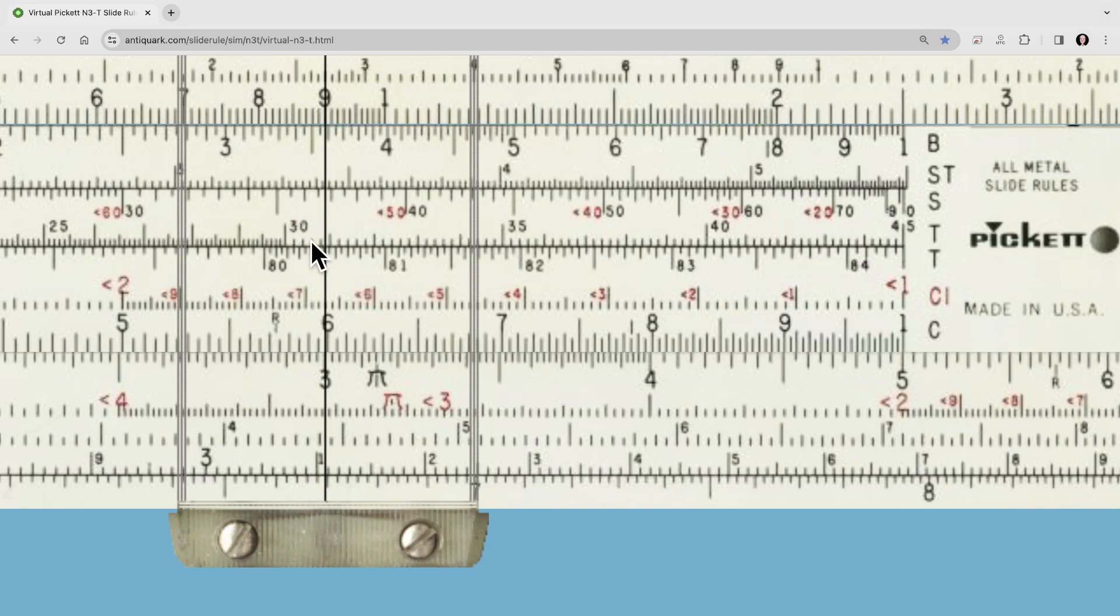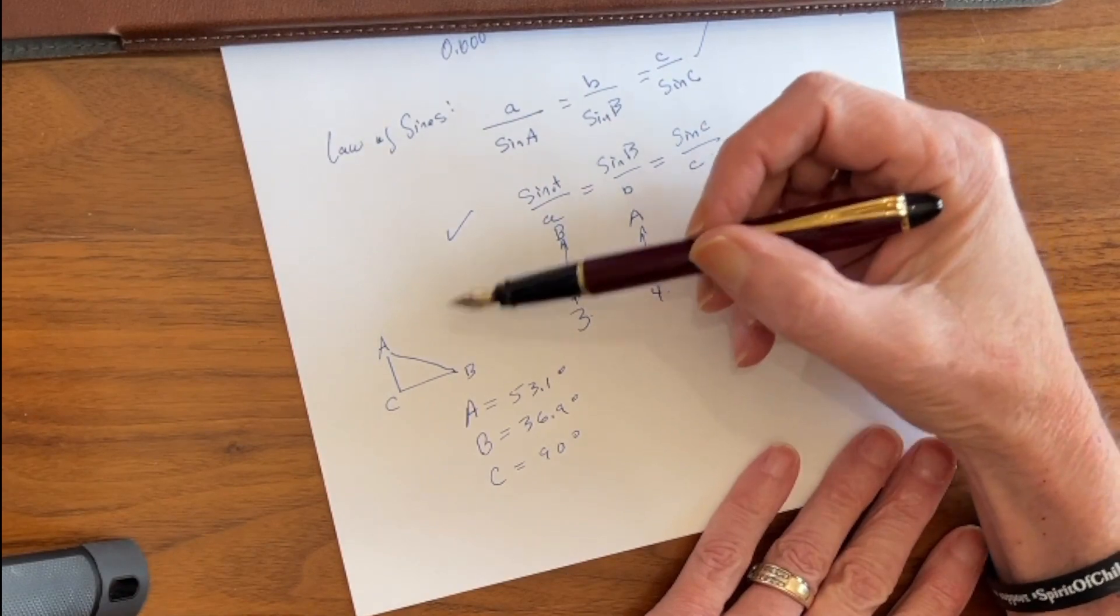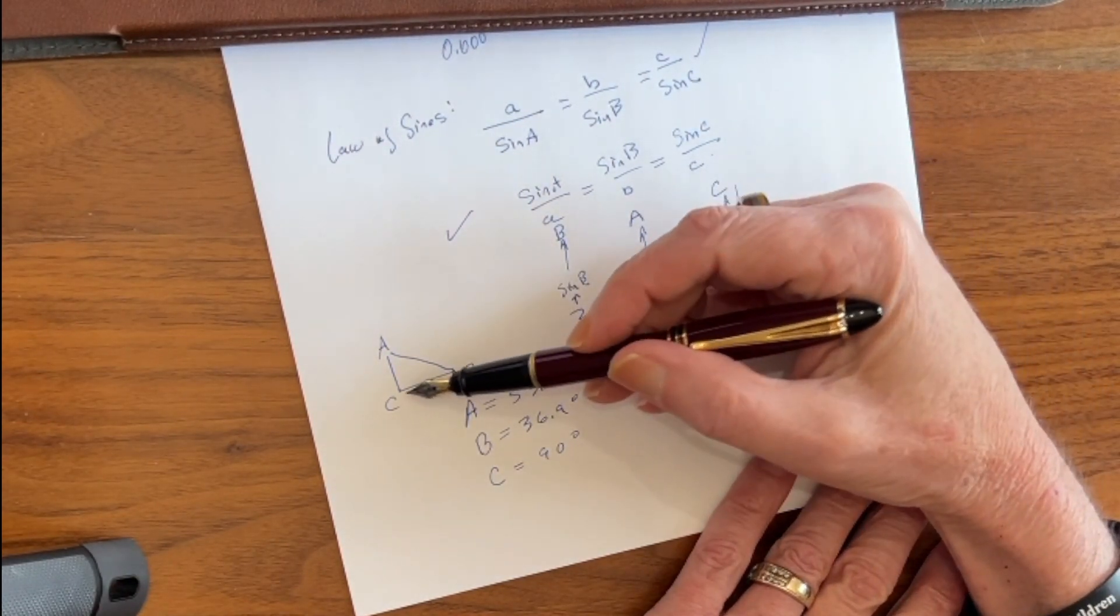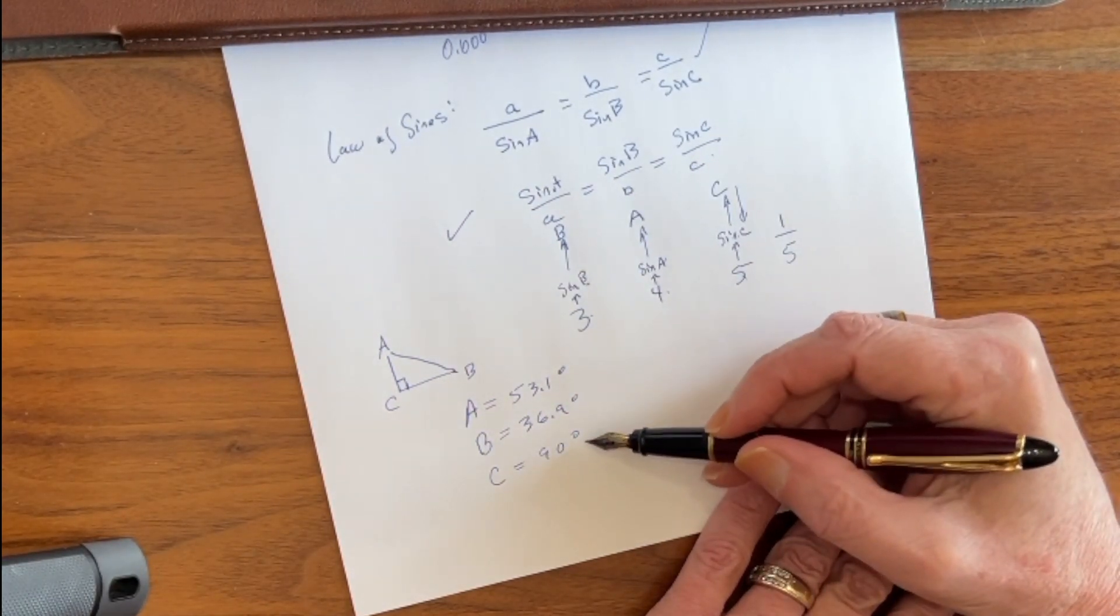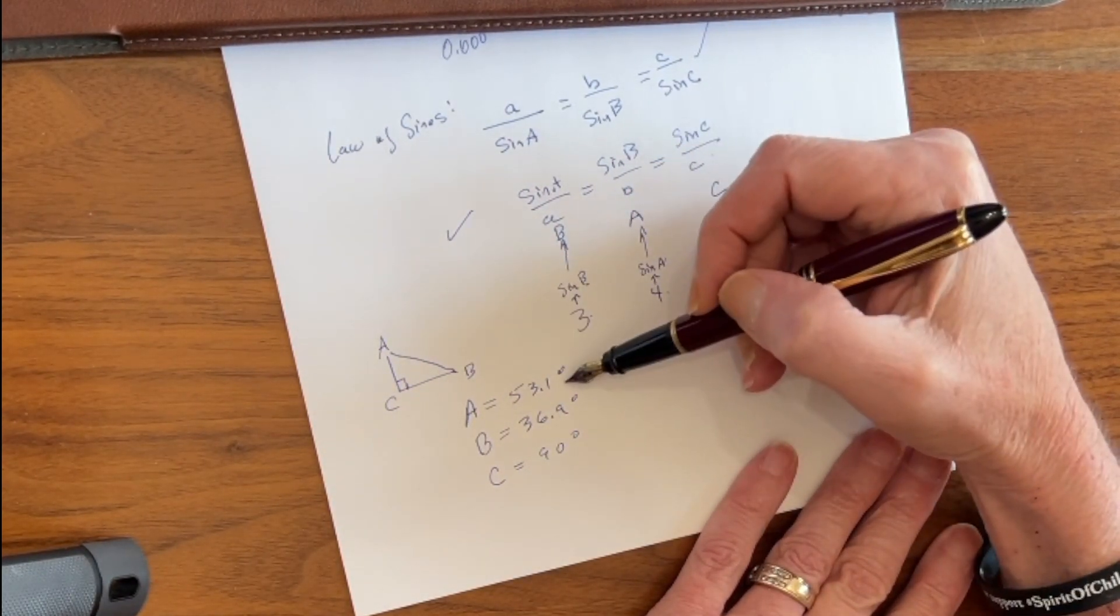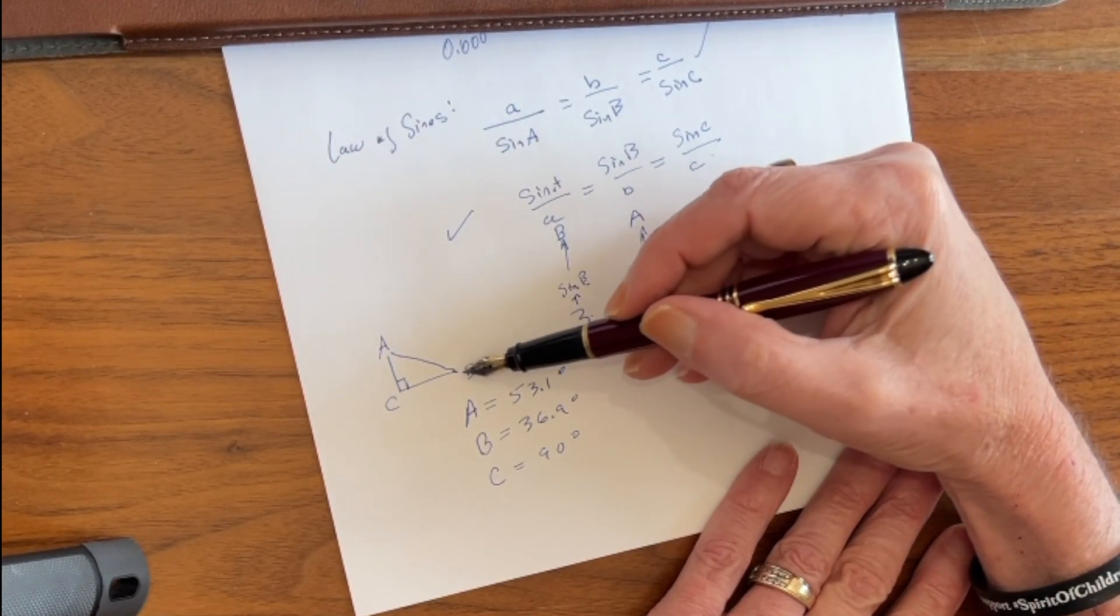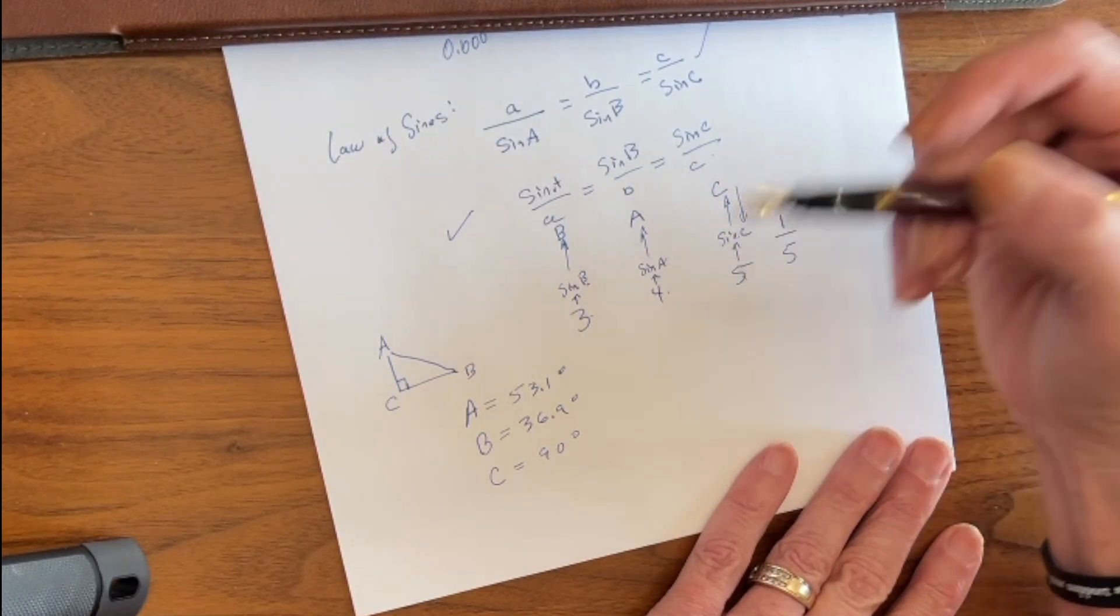So getting back to our triangle ABC, side C, obviously, is the 90 degree angle, so that's 90 degrees. Angle A is 53.1 degrees, and angle B is 36.9 degrees.